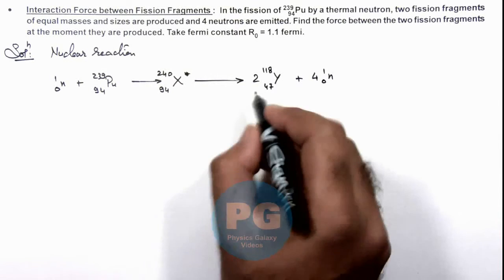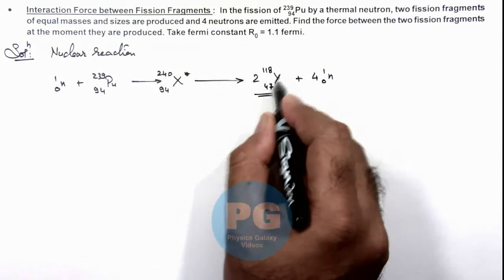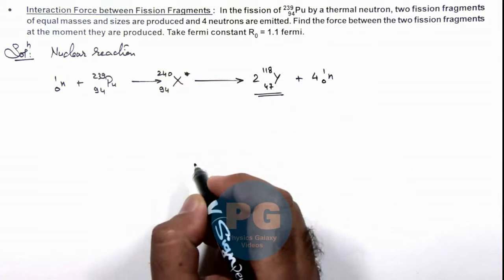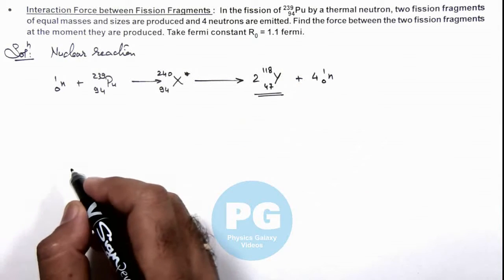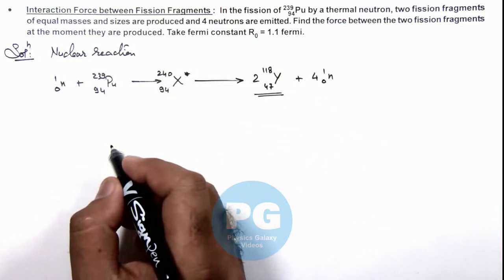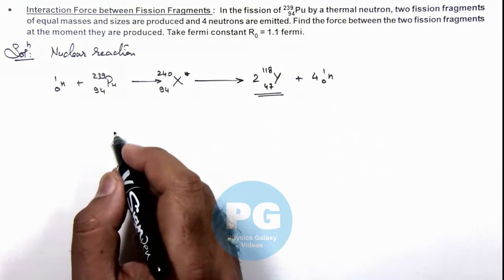Now in this situation we are required to find the interaction force between these two daughter nuclei Y, which are produced as a result of fission of this plutonium nucleus.